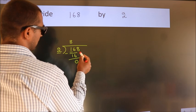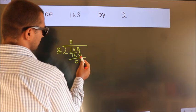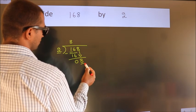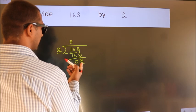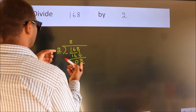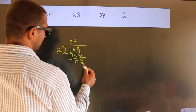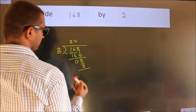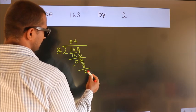After this, bring down the next number. So 8 down. When do we get 8? In the 2 table, 2 fours are 8. Now we subtract. We get 0.